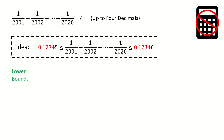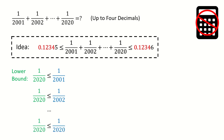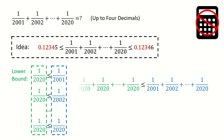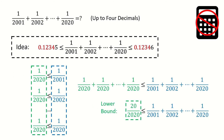Let's find the lower bound first. We can see that 1 over 2001 is greater or equal to 1 over 2020, and 1 over 2002 is greater or equal to 1 over 2020, and keep going until 1 over 2020 is greater or equal to itself. So the sum of the left-hand side is less or equal to the sum of the right-hand side, and we got here. For the left-hand side, it is equal to 20 over 2020, so we got this lower bound.